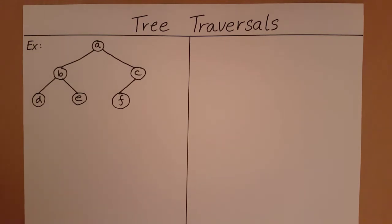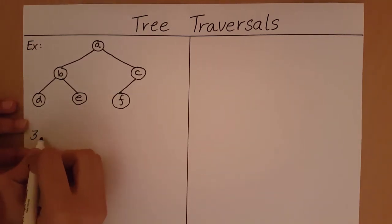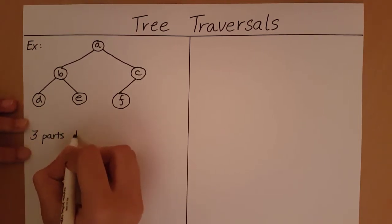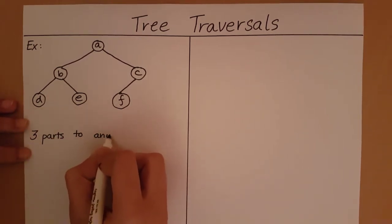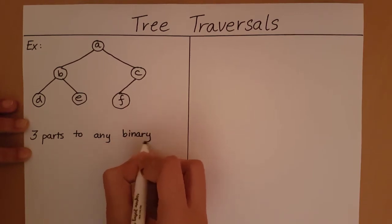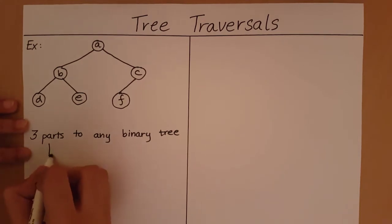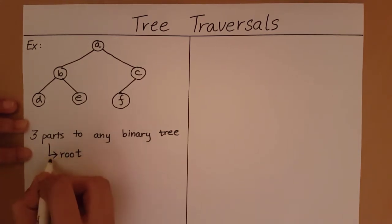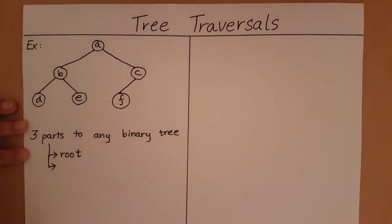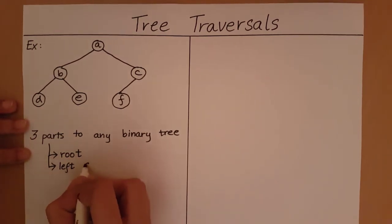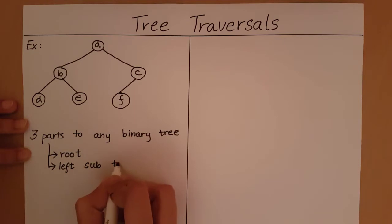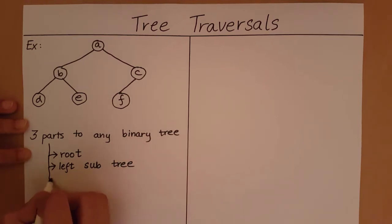Before we go into what are the methods to traverse a binary tree, we must understand that there are three parts to any binary tree. A binary tree has a root, it has a left subtree, and it has a right subtree.